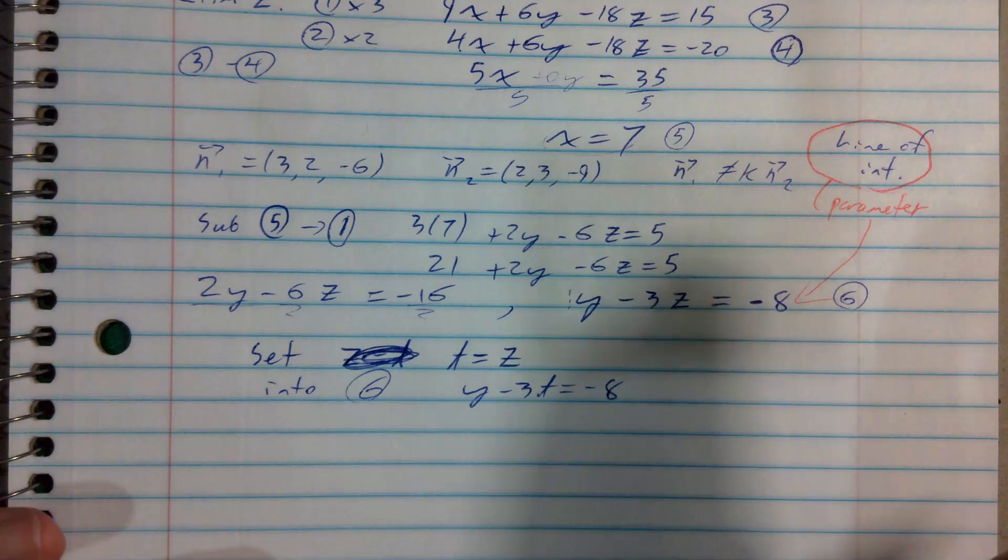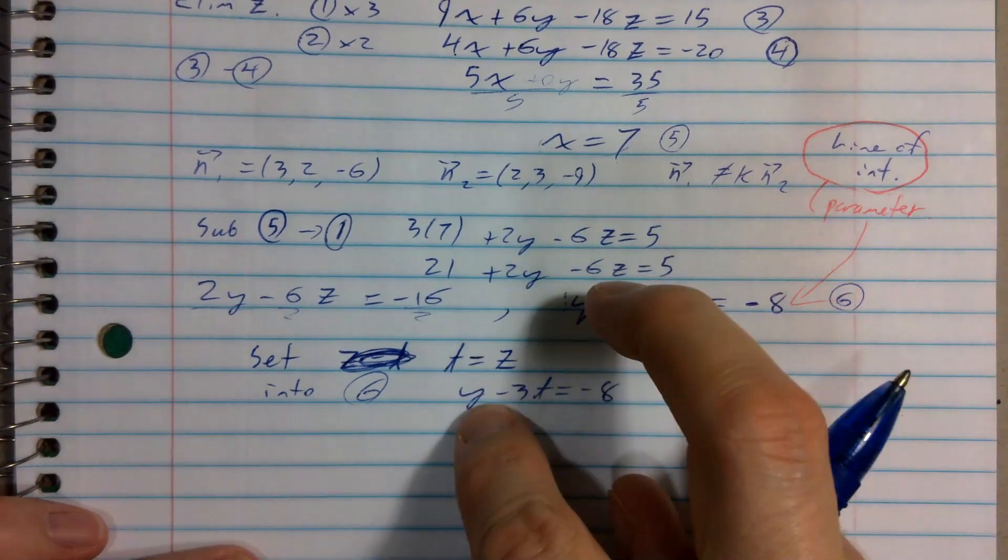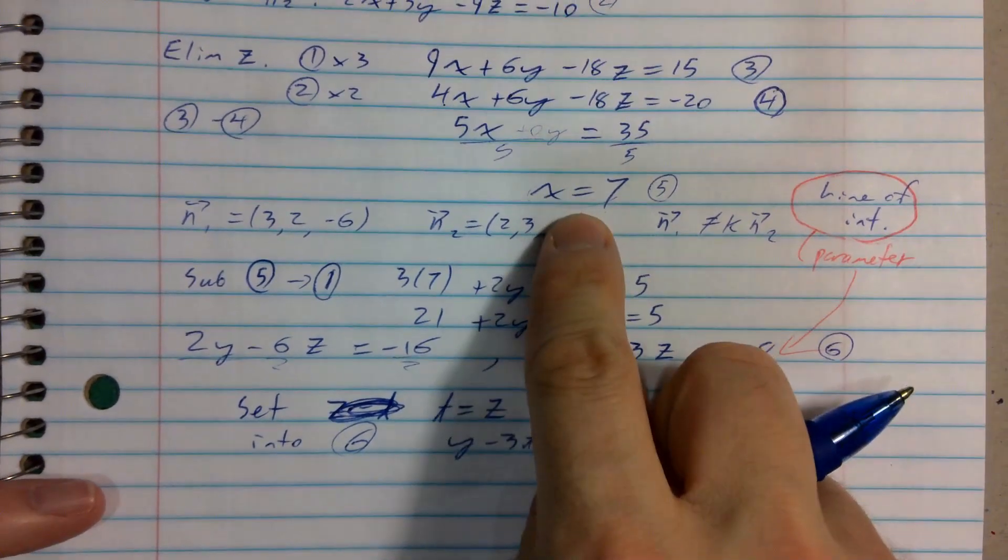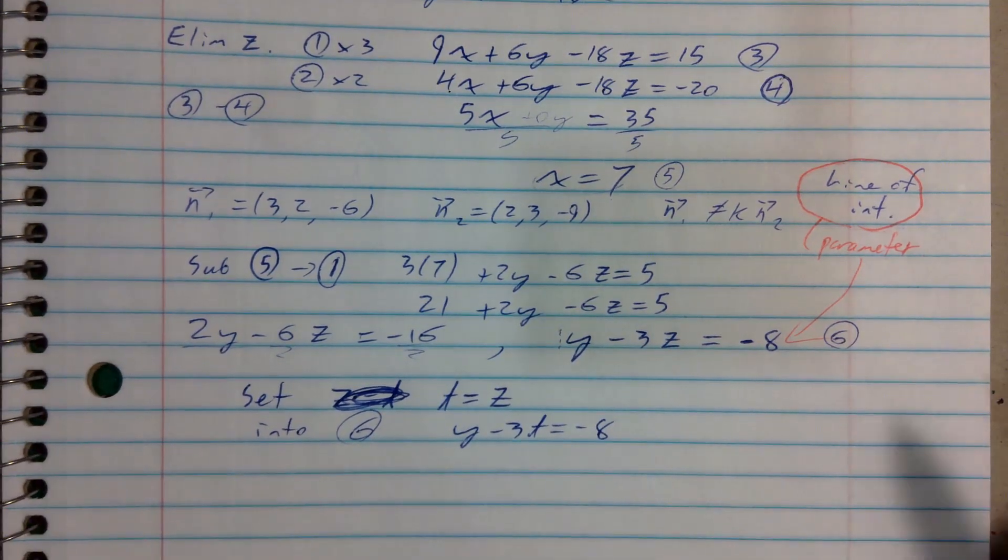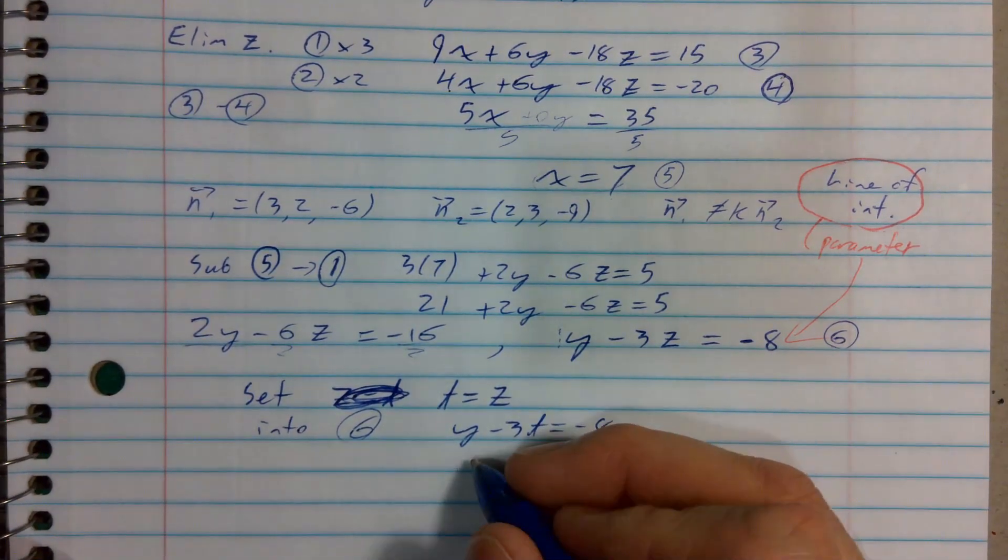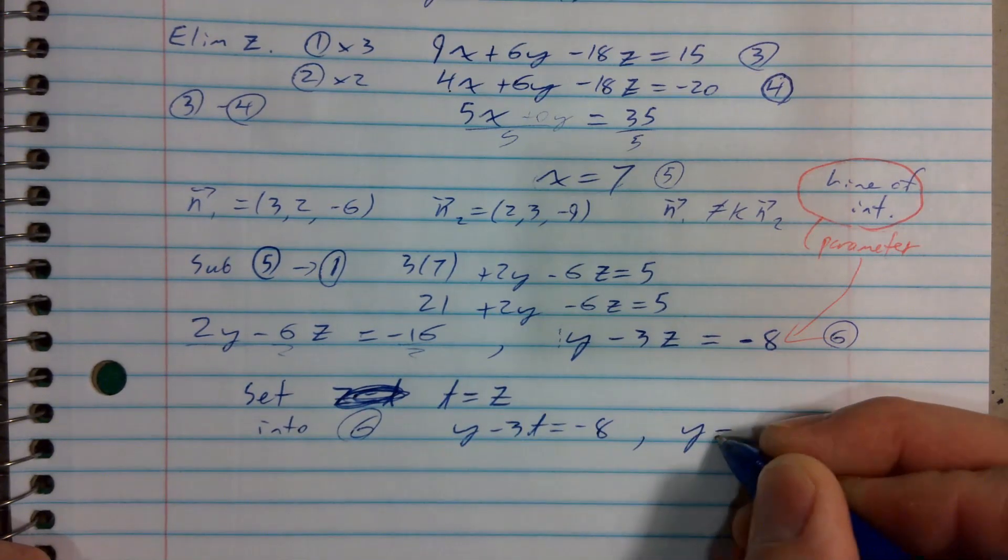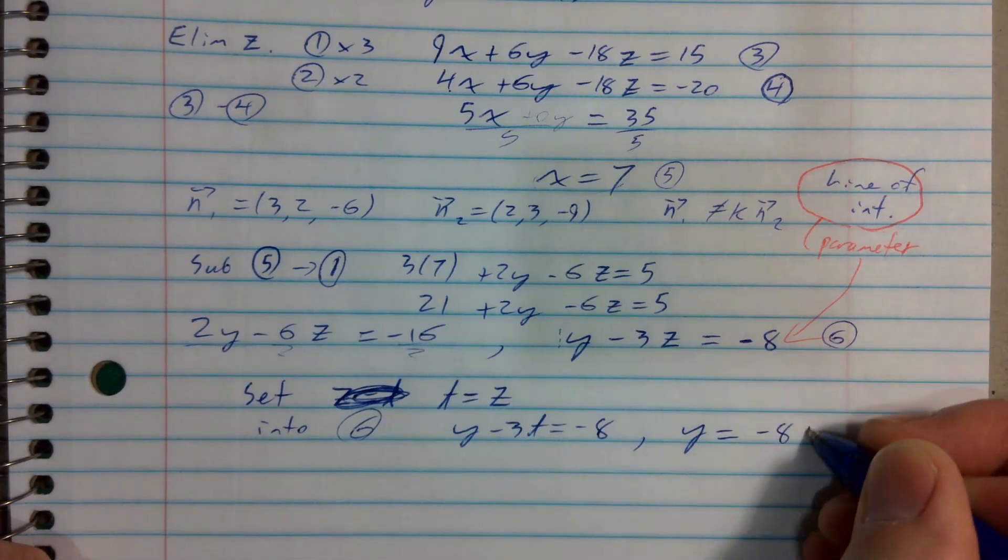And again, keep in mind, my goal wasn't to find the value of y, and that's why I was surprised when I found the value of x, but my goal is to find parametric equations or a contradiction or a truism here. So this will give me a parametric equation for y. y will be negative 8 plus 3t.